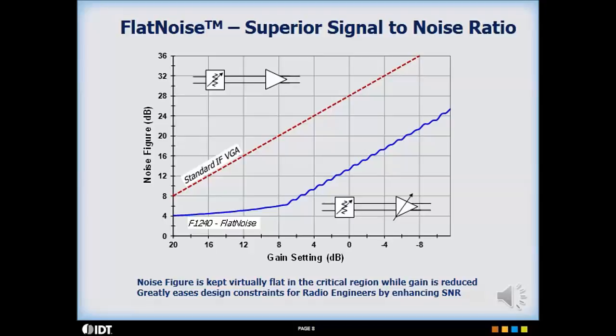On the other hand, when the F1240 is gain reduced, the noise figure essentially remains flat for the first 12 dB of adjustment before increasing.